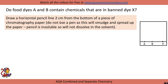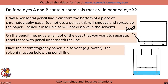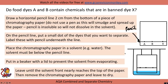To start, draw a horizontal pencil line around two centimetres from the bottom of a piece of chromatography paper. Do not use pen as it will smudge and spread up the paper — pencil is insoluble so it won't dissolve in the solvent. On the pencil line, put a small dot of each dye and label them A, B, and X. Place the chromatography paper in a solvent such as water — the solvent must be below the pencil line — in a beaker with a lid to prevent evaporation. Leave until the solvent front nearly reaches the top, then remove and leave to dry.